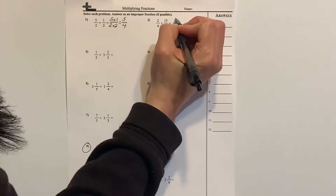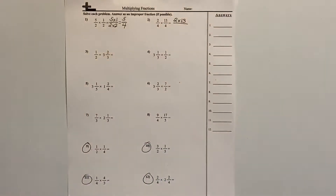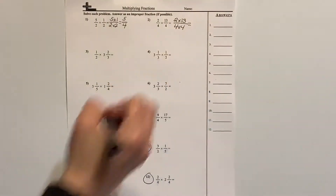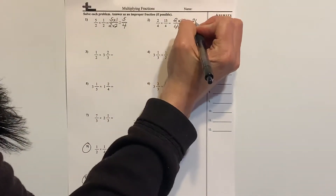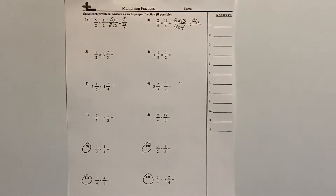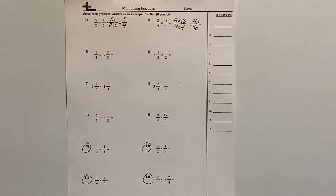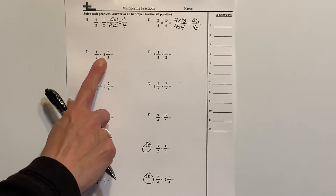Let's rewrite this next one: we'll multiply the numerators together — 2 times 13 — and then the denominators — 4 times 4. So I know 2 times 13 is 26, and 4 times 4 is 16. So now I have 26 sixteenths as my final answer.